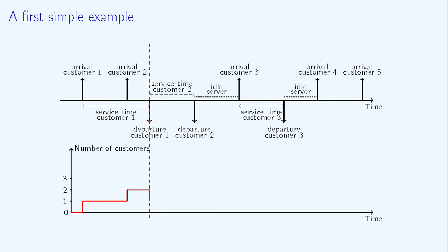Then, the first customer leaves the system, so the number of customers goes back to 1 and the second customer starts to be served.